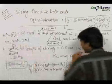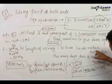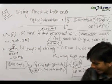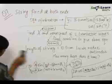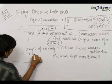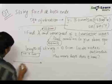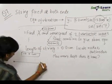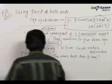Now, for part b, we need to find out the position of nodes and antinodes. For that, let us draw the diagram of the string. The length of the string is given to be 10 centimeters. This end of the string and this end are stationary. Therefore, they act as nodes.